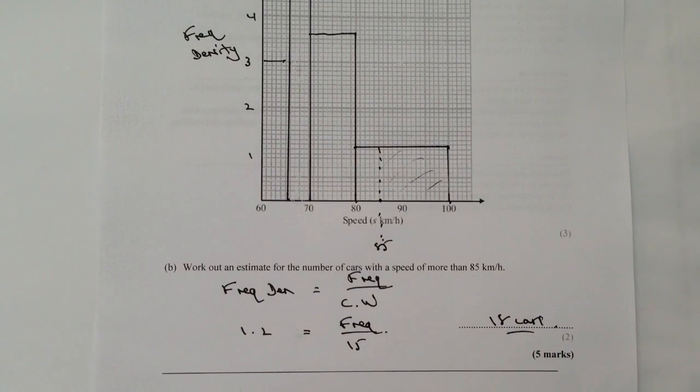So what it's saying is that 18 cars have got a speed of more than 85 kilometers per hour. I hope that's okay for you. There are a couple more examples on this particular playlist, please do visit the website, you'll be able to download all these answers, and I'll look forward to seeing you inside the next video.